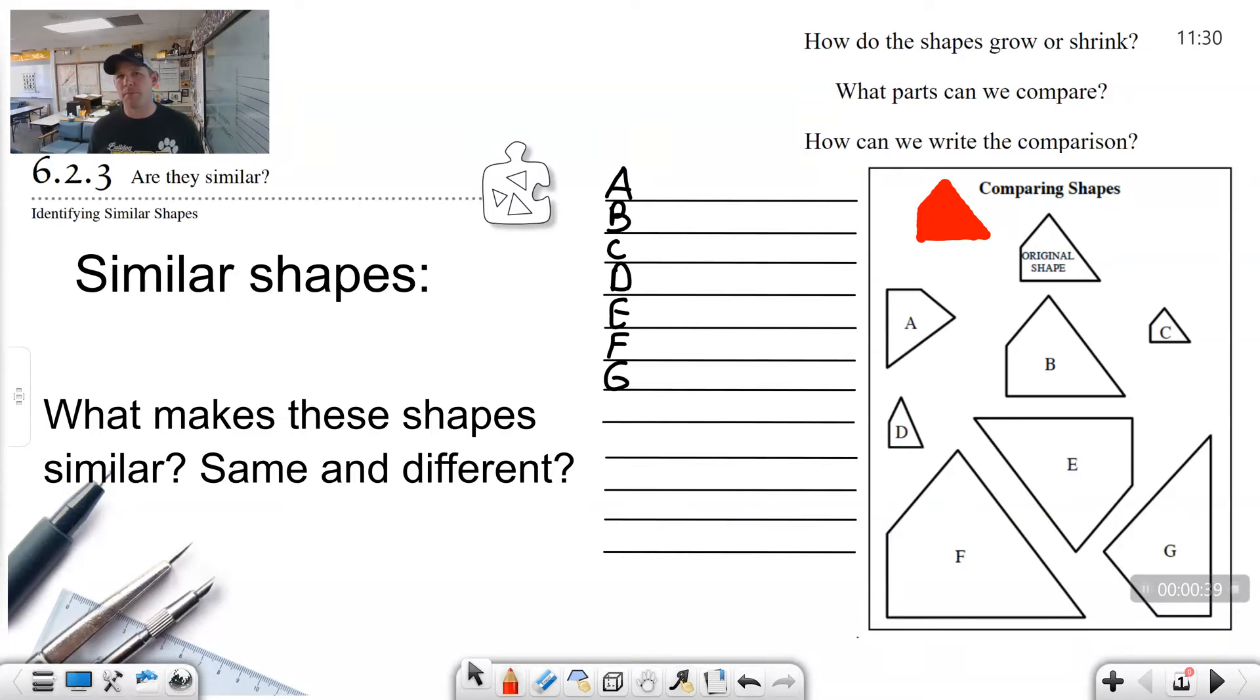Yesterday we had problem 6-54, and we had a dilated shape. You wrote three parts. The first part was we noticed that the lines were parallel. When we dilated the shape on the coordinate graph, the lines were parallel.